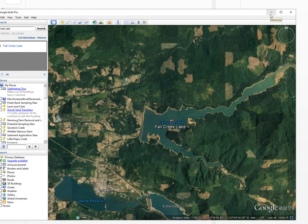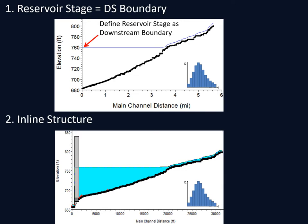There are some downsides to this approach. One downside is you can't model the downstream reach of the reservoir, or model multiple reservoirs in series. So the second method is to actually model the full reach and include an inline structure. The inline structure is the way that we tend to model dams in HEC-RAS. But you can't actually allow the structure to route the water through it in a quasi-unsteady flow model. What you have to do is define an internal stage for your reservoir and operate the reservoir by defining the reservoir stage.